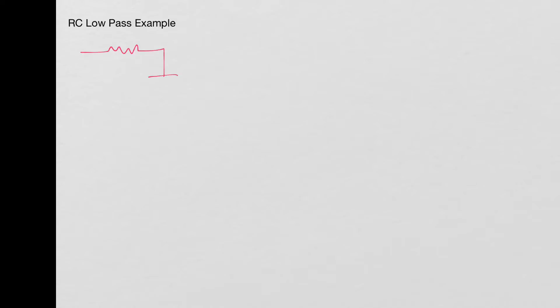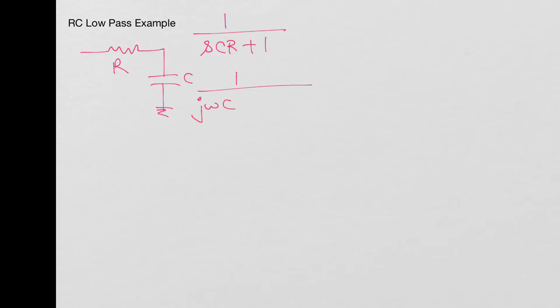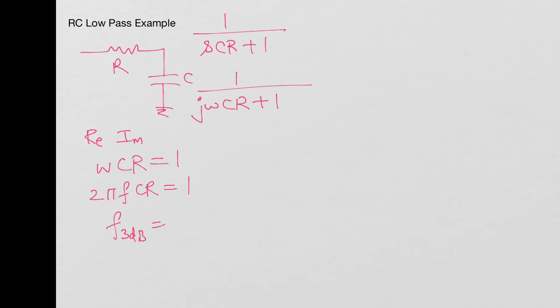So let's take this RC circuit — you have R and C — and we wrote that the transfer function for this is 1 over (sCR + 1), which is 1 over (jωCR + 1). Then we said that at the 3dB frequency the real part and the imaginary part are equal, which means ωCR = 1, or since ω = 2πF, we get F_3dB = 1 over (2πCR).